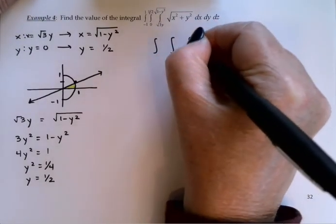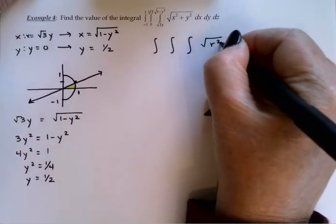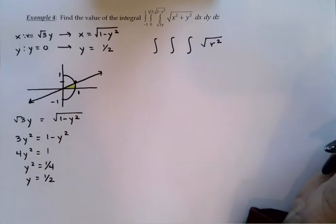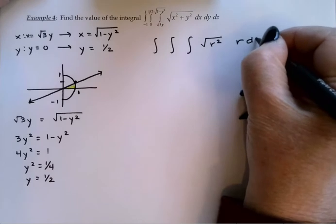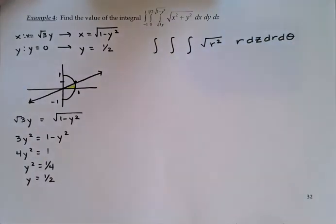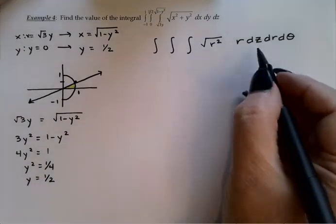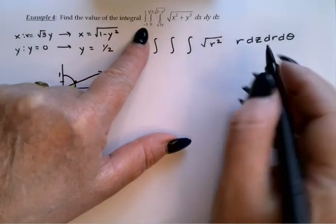To rewrite the integral, my integrand becomes the square root of r squared, which will make r in the next step. And my dv is r, dz, dr, d theta. The z limits of integration have not changed. They're still negative 1 to 1.